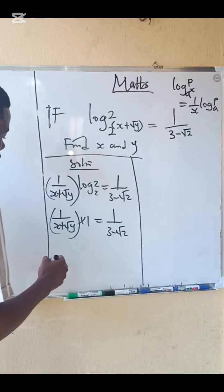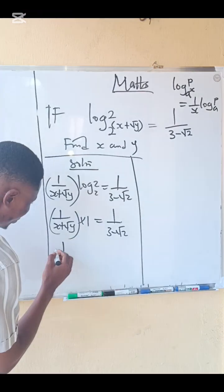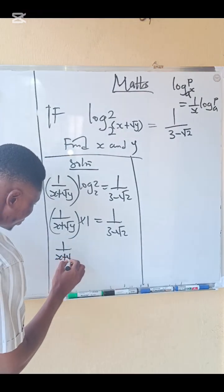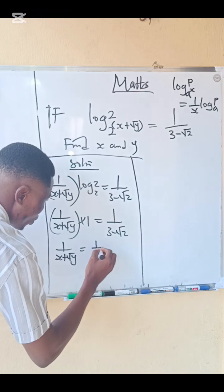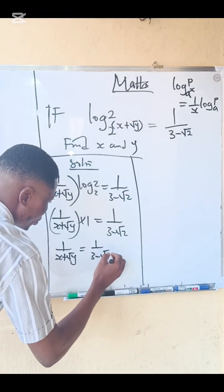So we have 1 over (x plus root y) equals 1 over (3 minus root 2).